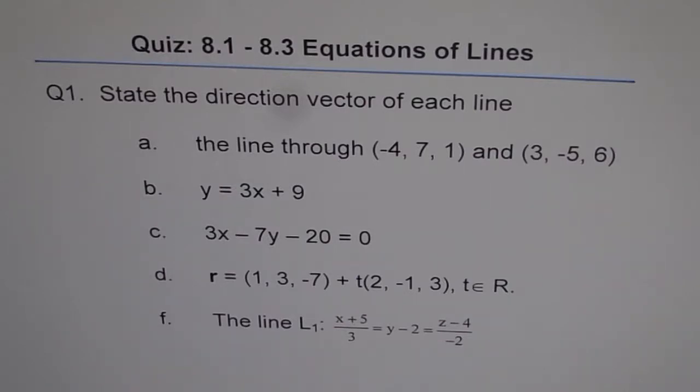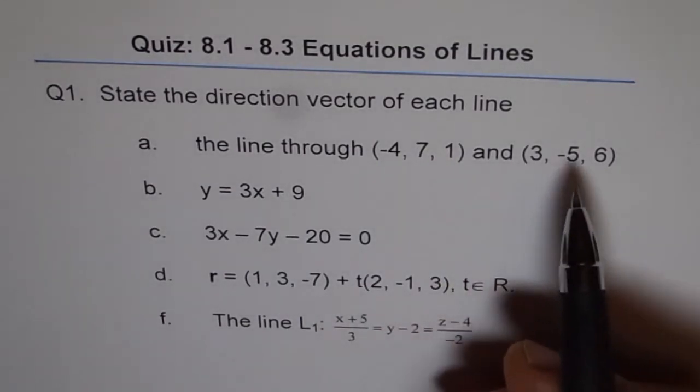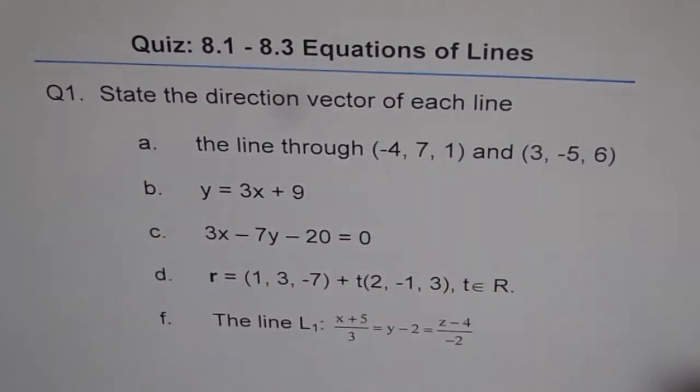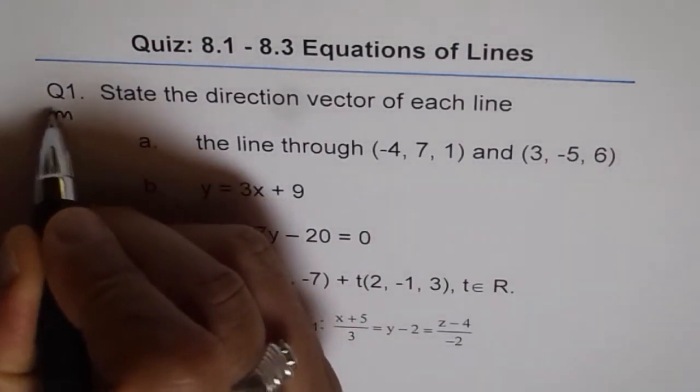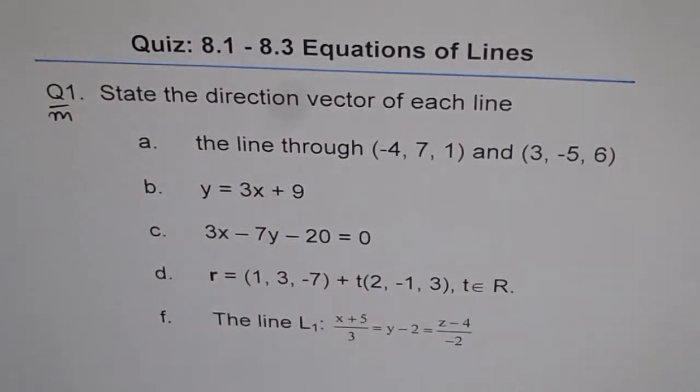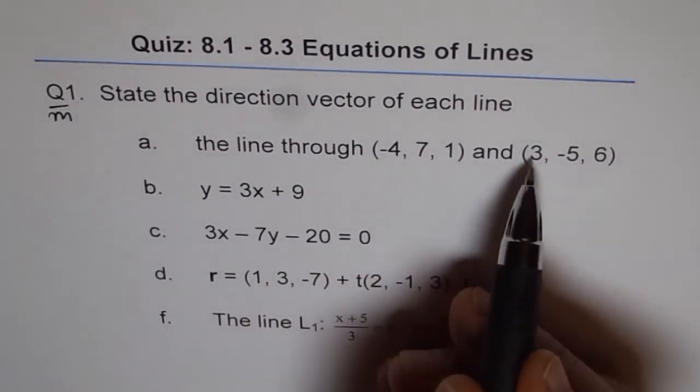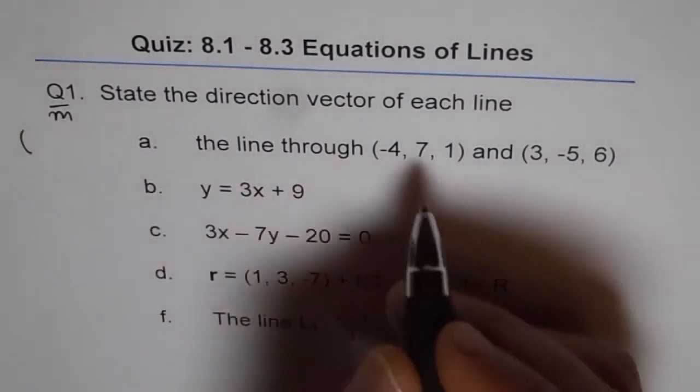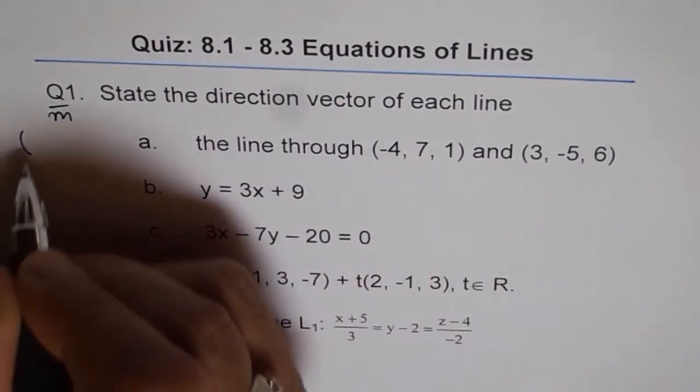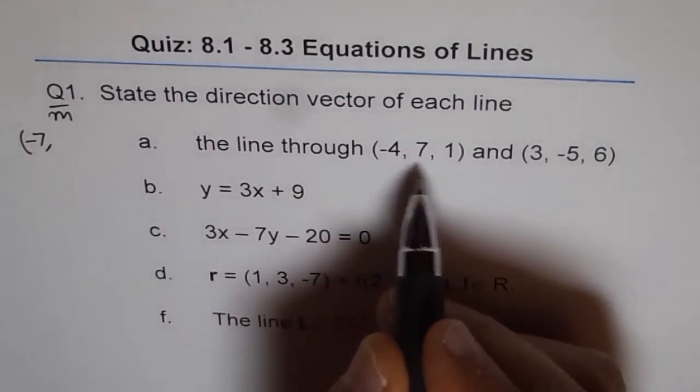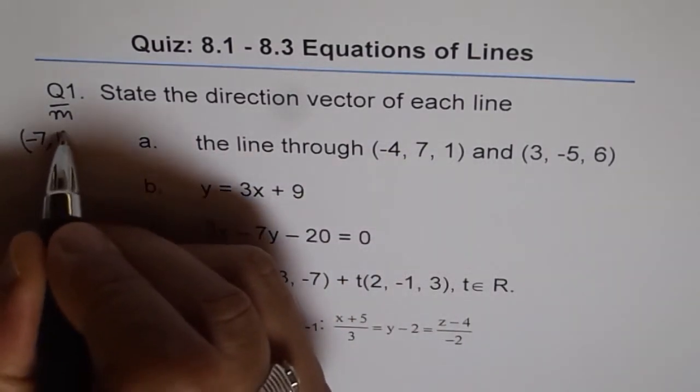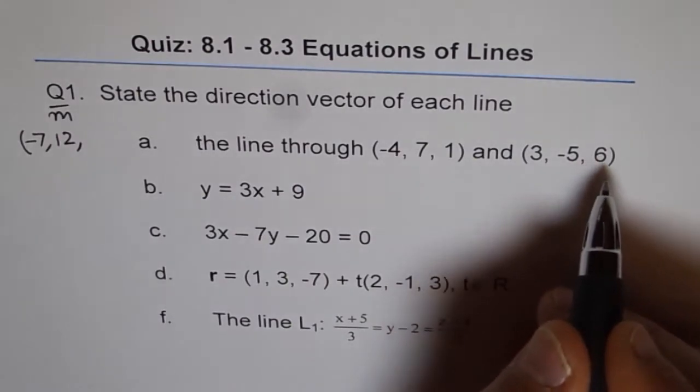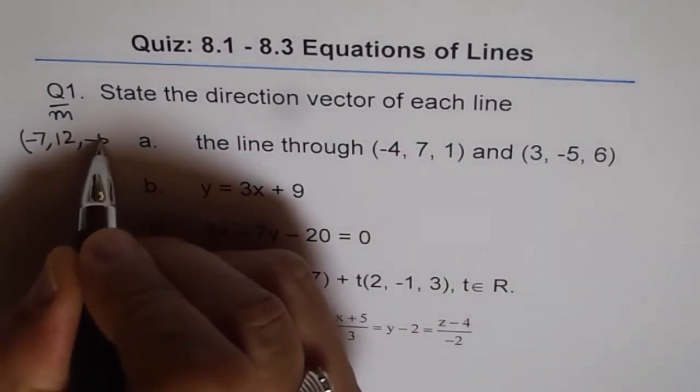The line through points given to us, that seems to be simple. You just take away one from the other and you know the direction vector. So M is, we will write direction vector M here. So we can fill up M here for all. We can say this minus this, which is minus 4 minus 3 will give us minus 7. And 7 minus of minus 5 means 7 plus 5, which is 12. And 1 minus 6 will give us minus 5.